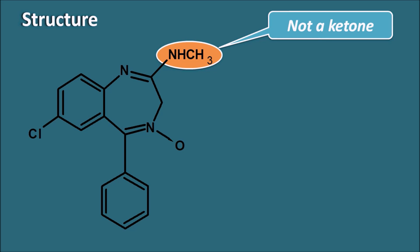Let us give the numbering to Chlordiazepoxide, starting from the nitrogen. Numbering from one to nine, we can observe that the second position has a methylamino group and the fourth position has an oxide group. These are the two structural differences of Chlordiazepoxide compared with the other benzodiazepines.